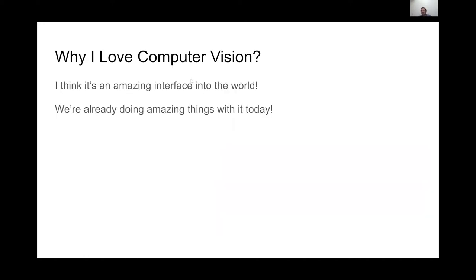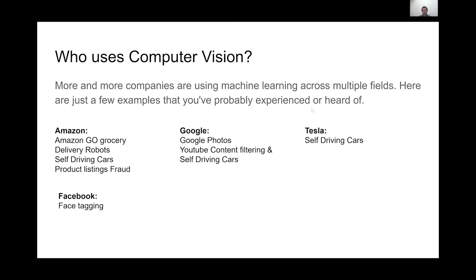Why I love computer vision: I think it's a really exciting field. If you look around today at what people are doing with it, there are a lot of practical applications you can bring to many different fields. More and more companies are using machine learning and computer vision across multiple fields. Has anyone been to an Amazon Go store? There are several in Seattle and some in other states.